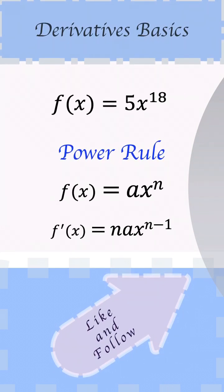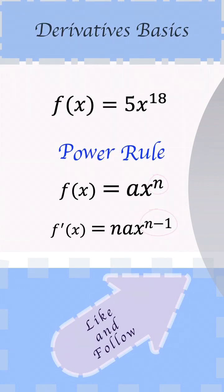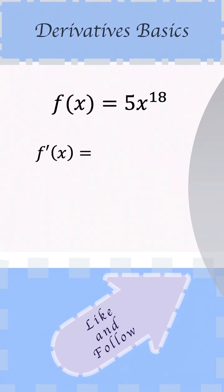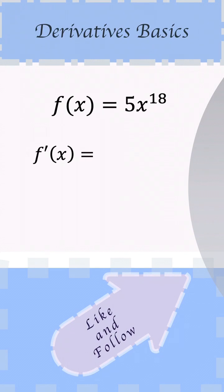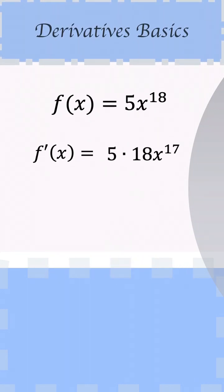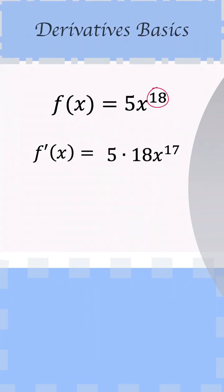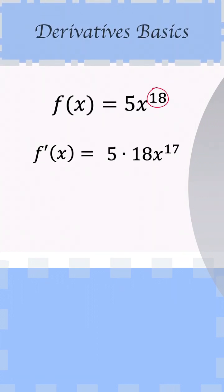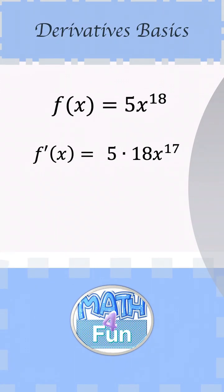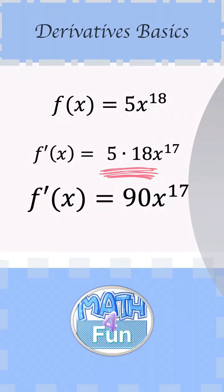So here in this case, we can say f prime of x is going to be equal to—we drop down the 18, so we say 5 times 18, and x becomes to the power 17, which is 18 minus 1. So we subtract 1 from the power here. That's good. And we simplify, so it becomes 5 times 18 is 90, and x to the power 17.